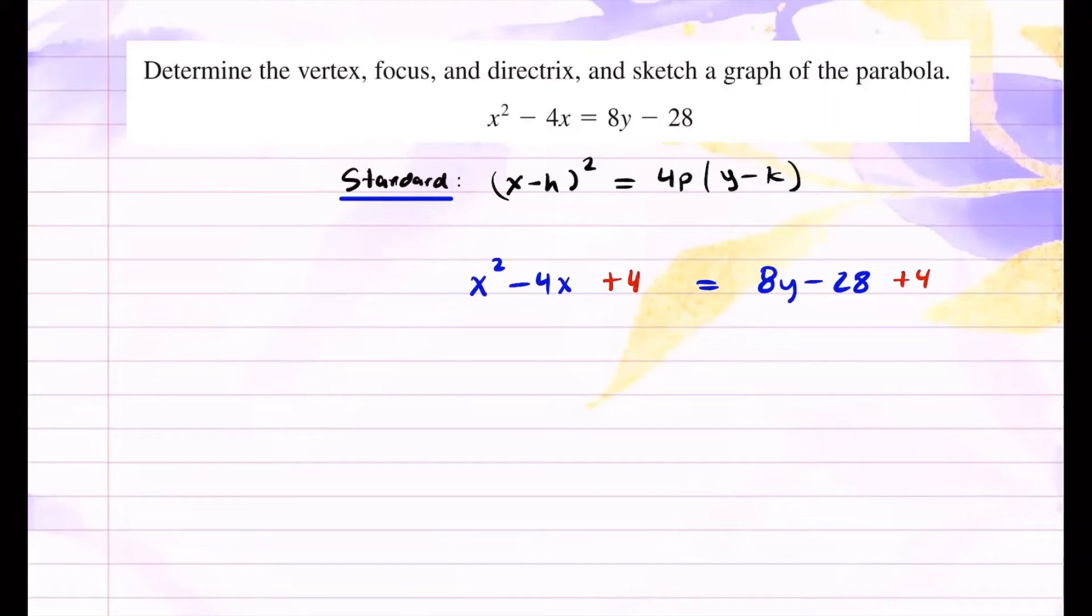So now on the left hand side, I have a perfect square. You have (x - 2)². On the right hand side, you can just combine these two numbers. So you have 8y - 24. And it looks almost like this form that we want. Not that one, but this one right here, the standard form. I just need to group the right hand side.